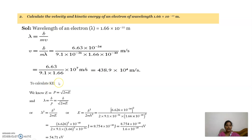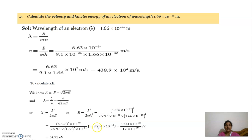Now we need to find the kinetic energy. The expression of de Broglie wavelength in terms of kinetic energy is lambda equal to h by root of 2mE, where m is the mass of the electron and E is the kinetic energy. Squaring both sides and rearranging, we get E equal to h square by 2m lambda square. Substituting the values of Planck's constant, mass, and lambda, we get 8.754 into 10 power minus 18 joules.